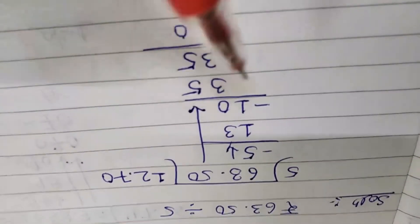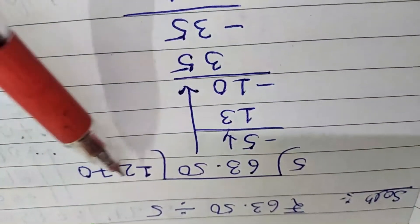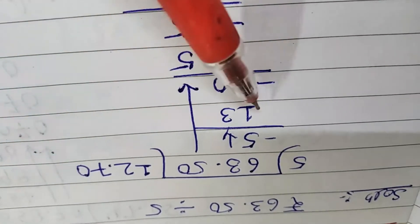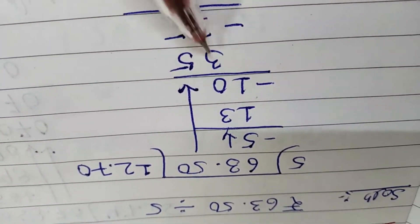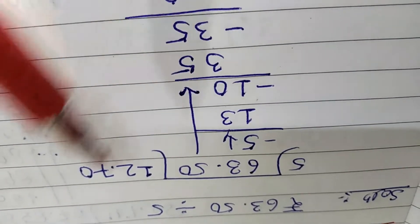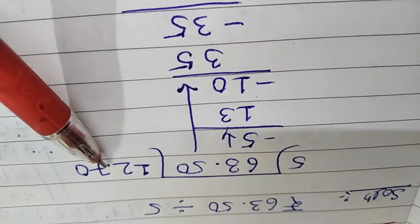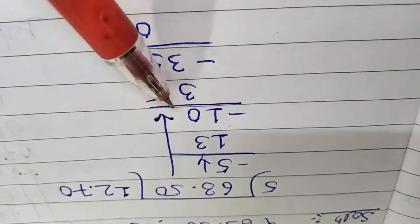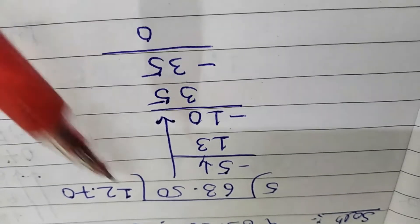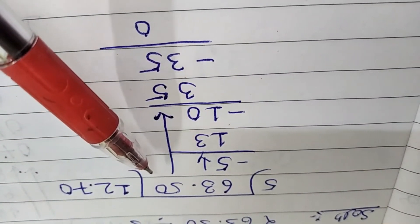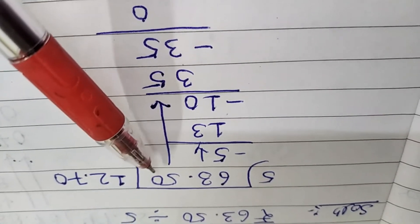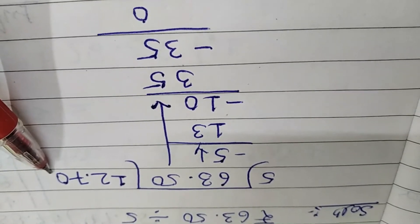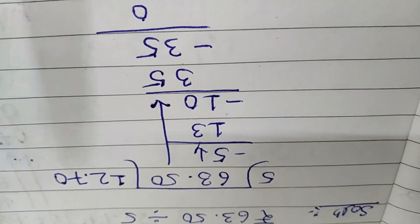For division: divide by 5. Five 1s are 5; bring down, 1 minus here gives 3. Five 2s are 10; 13 minus 10 gives 3, bring down. Keep track of the digit position and put the decimal point in the answer when you reach the decimal in the dividend.